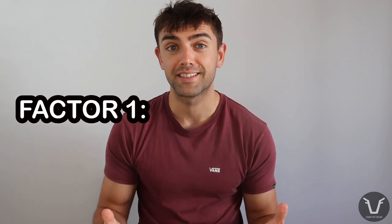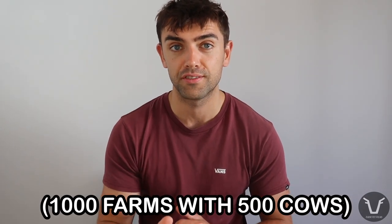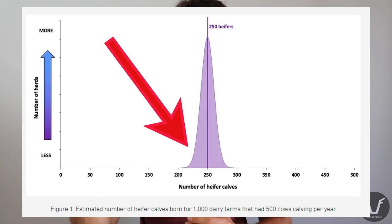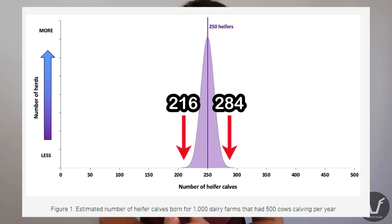Intuition tells us we should expect a 50/50 split between bulls and heifers, and the first factor is unsurprisingly random chance. Yes, we're expecting a 50/50 split, but not exactly, and not on every farm. To illustrate this, here is a hypothetical dataset from 1,000 farms with 500 cows each — this is what we call a bell curve. The vast majority of farms will be very close to that 50/50 split, but smaller numbers will have significantly more bull calves or more heifer calves. That is just chance — like flipping a coin.